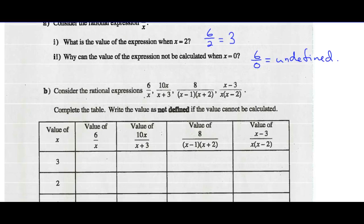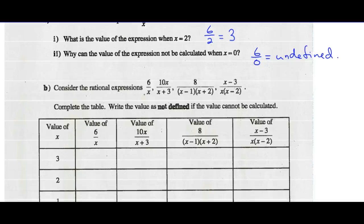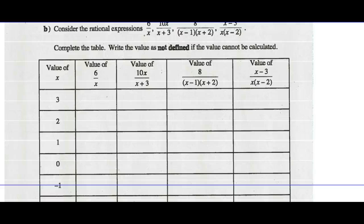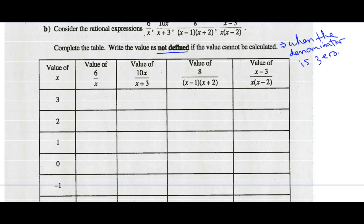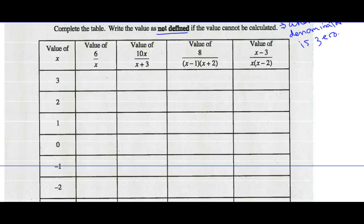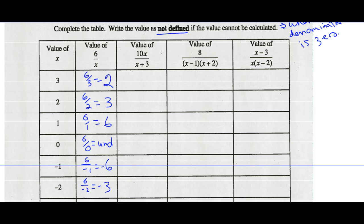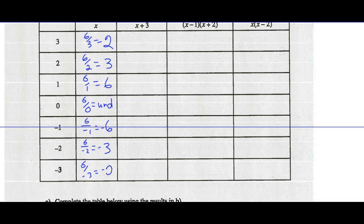Consider the rational expressions 6 over x, 10x over x plus 3, 8 over x minus 1 times x plus 2. Complete the table below, writing the value as not defined when the value can't be calculated — in other words, when the denominator is 0. So anytime you have a denominator of 0, it can't be calculated. Let's have a look. When x is 3, 6 over 3 gives us 2. When x is 2, 6 divided by 2 is 3. When x is 1, 6 divided by 1 is 6. When x is 0, 6 divided by 0 is undefined. 6 divided by negative 1 is negative 6. 6 divided by negative 2 is negative 3. And 6 divided by negative 3 is negative 2.